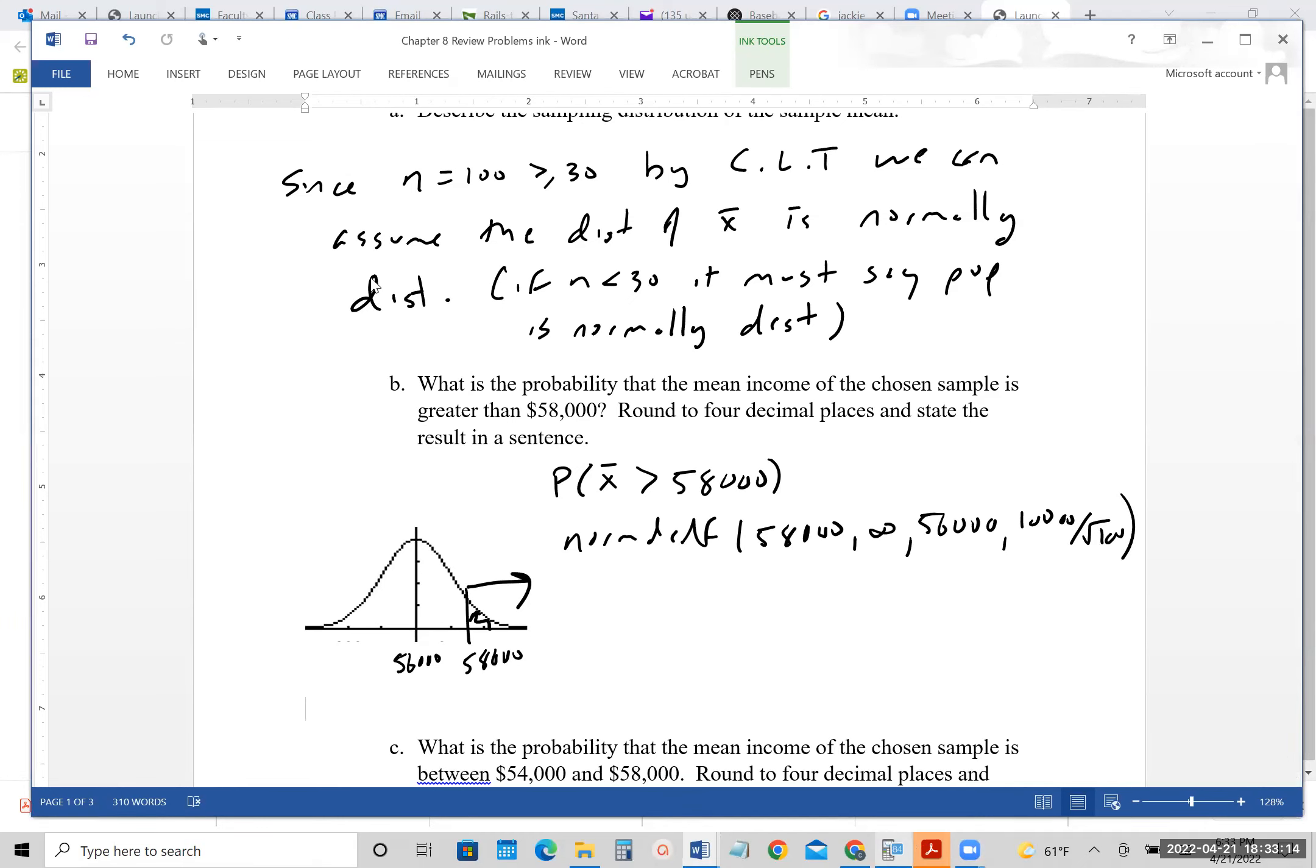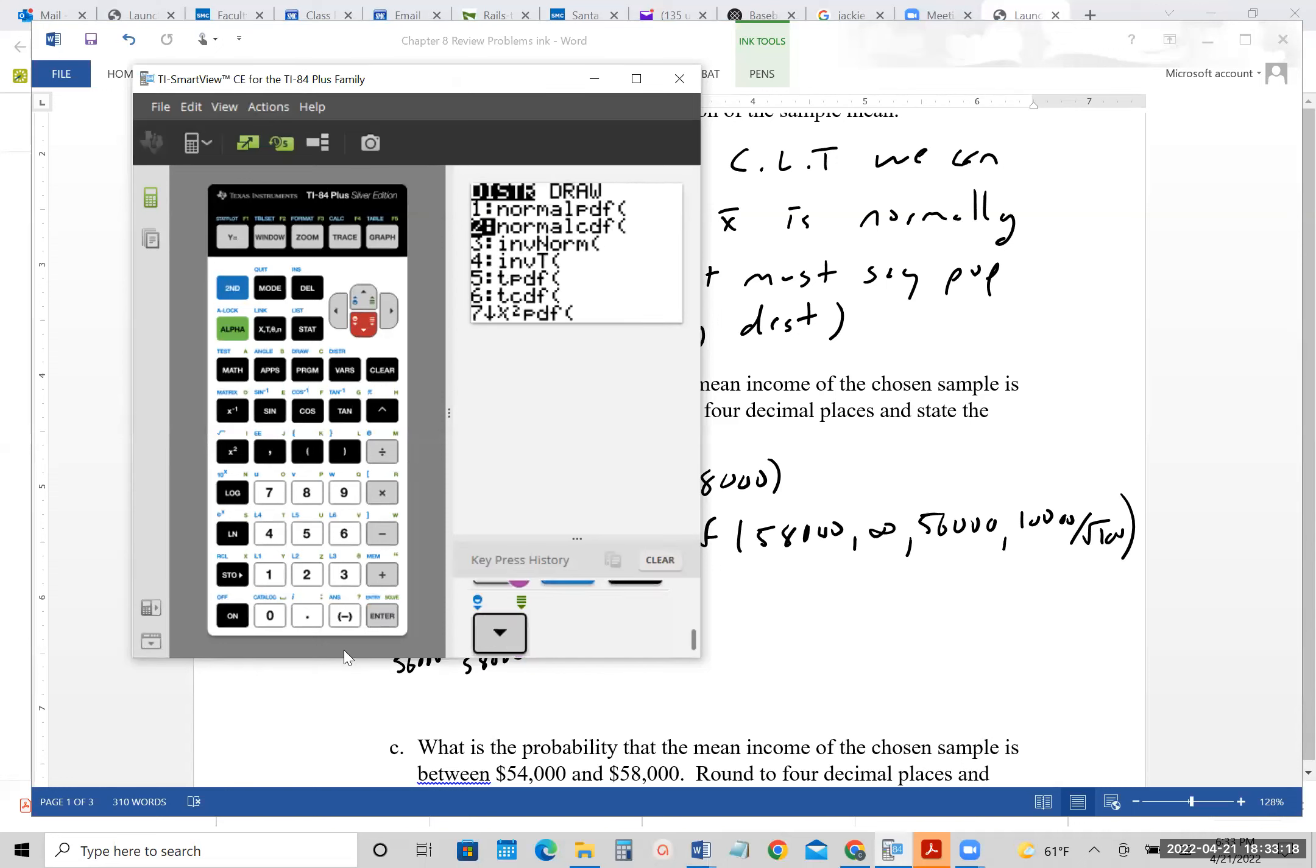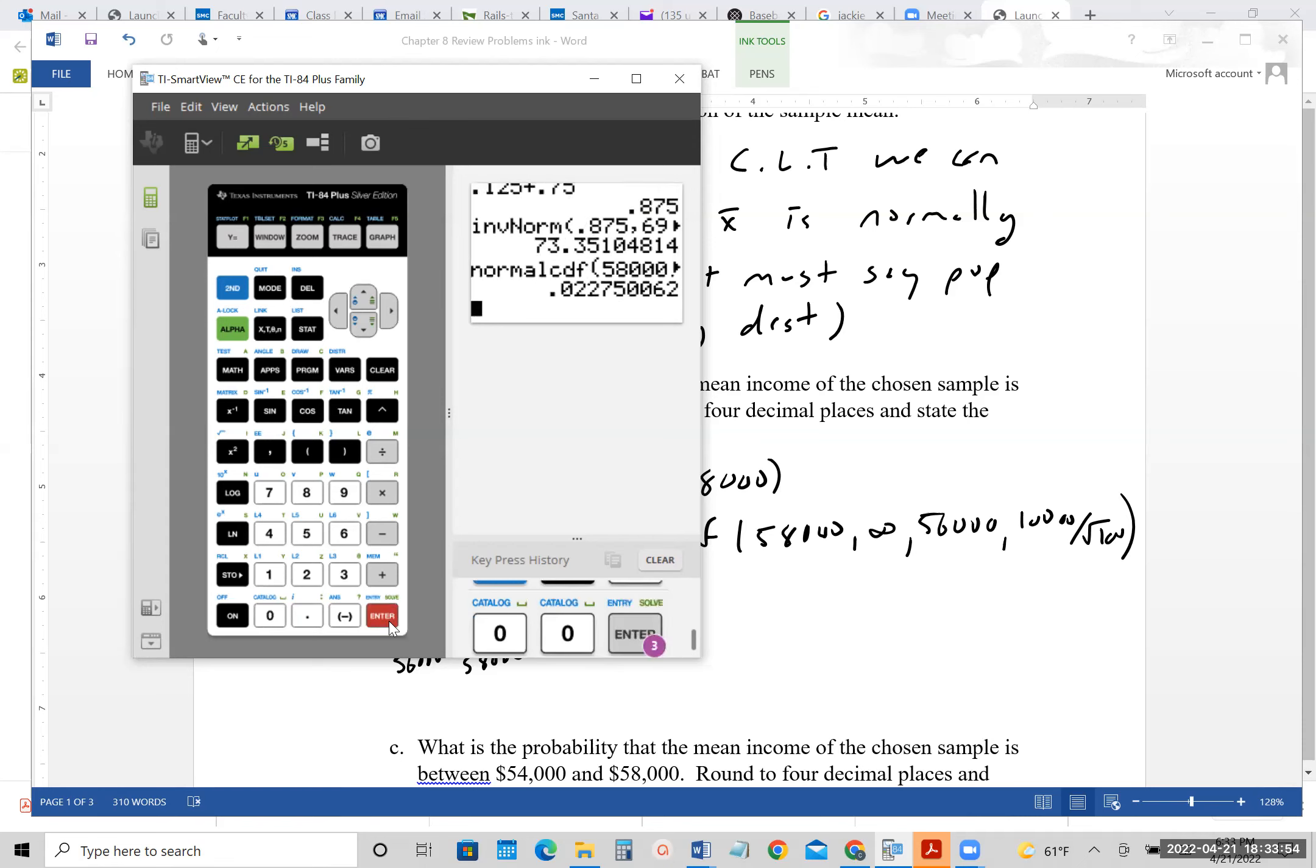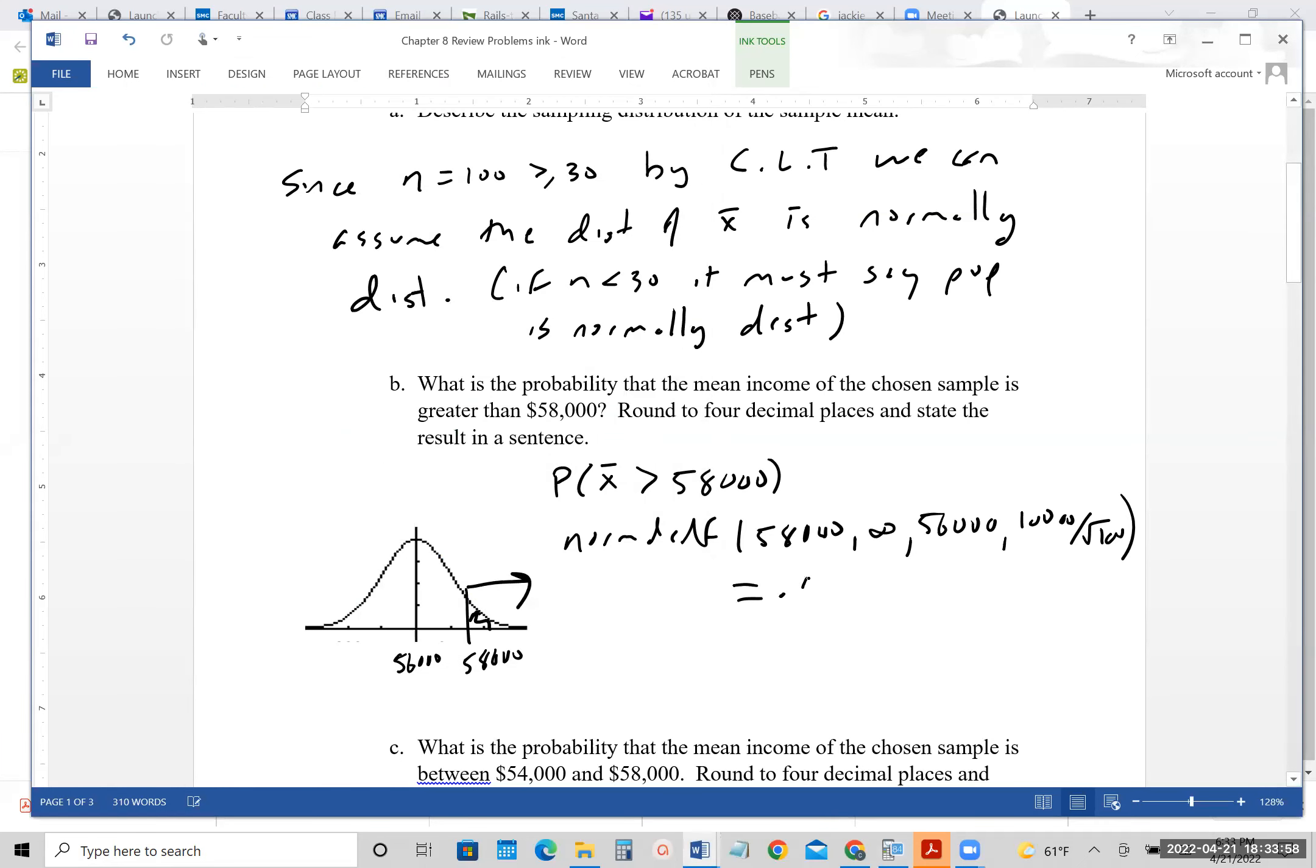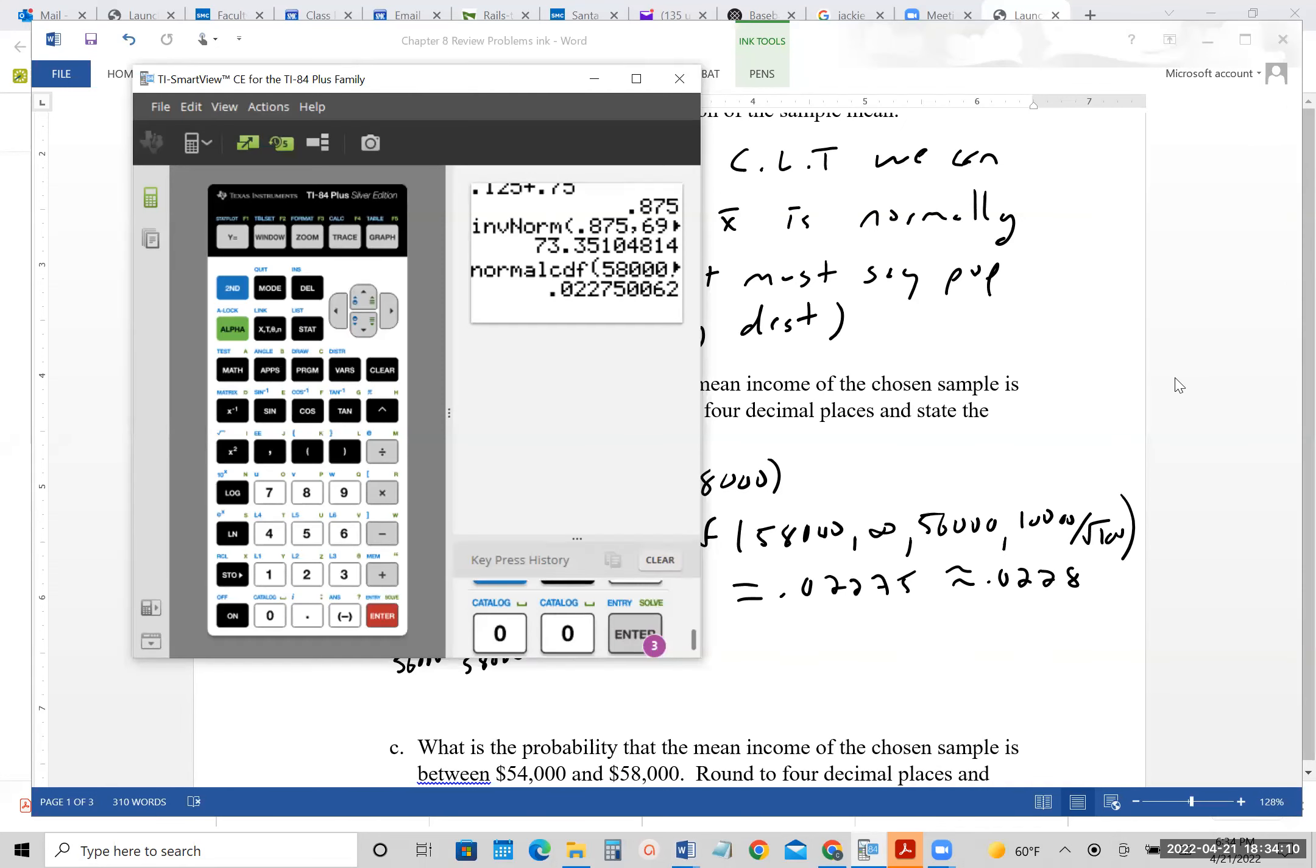Let's go to our calculator. Second, VARS, we're going to go down to normal CDF. We're going to do the same thing we did in Chapter 7, but we have to accommodate now for the sample size. So we're still going to use the infinity for our upper bound, and then our standard deviation will be the 10,000 divided by the square root of 100. And we get 0.02275, so roughly 0.0228 would be our answer for that.